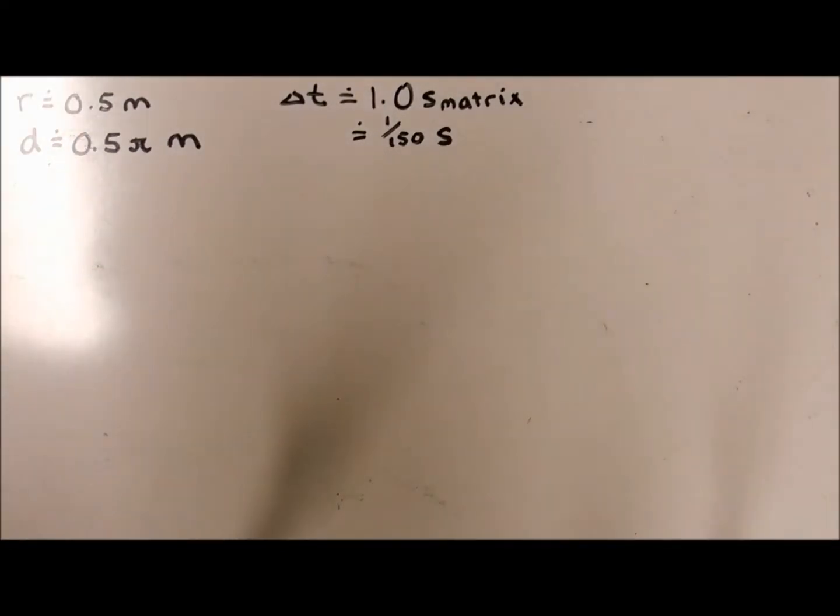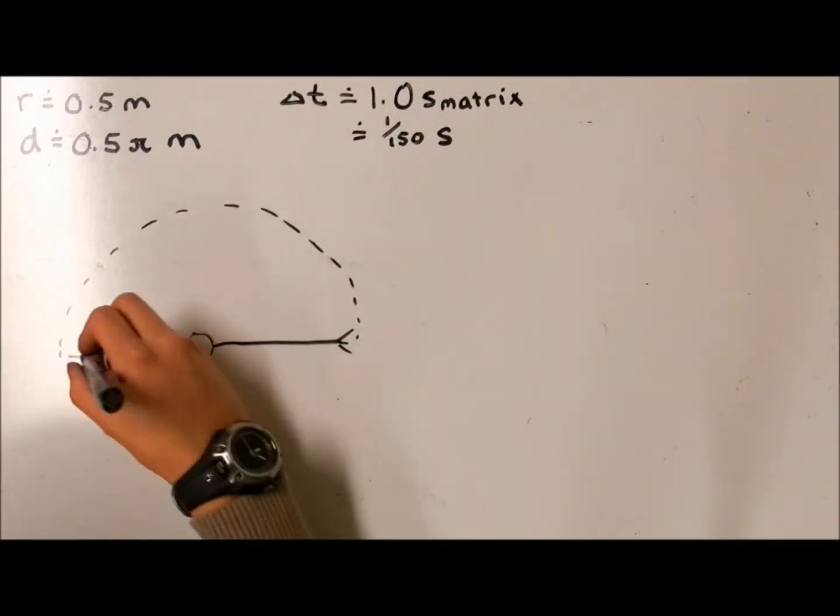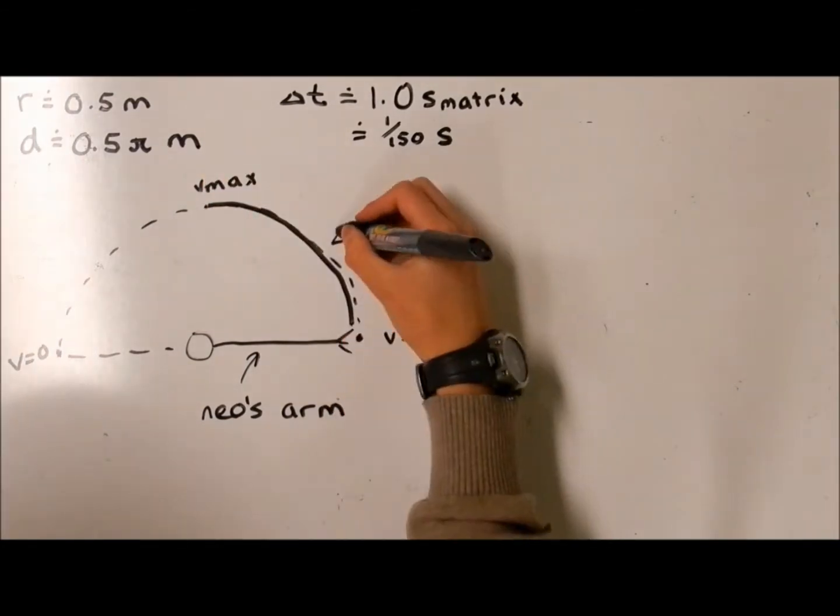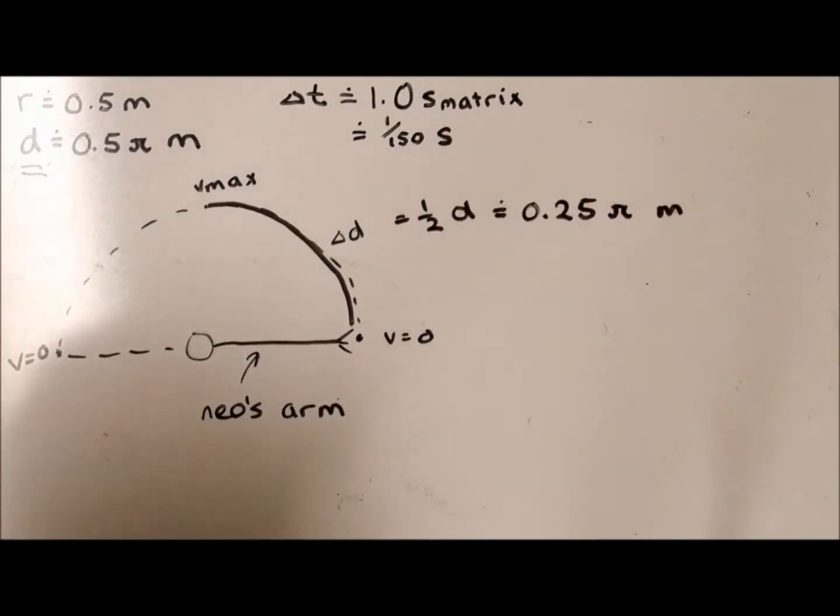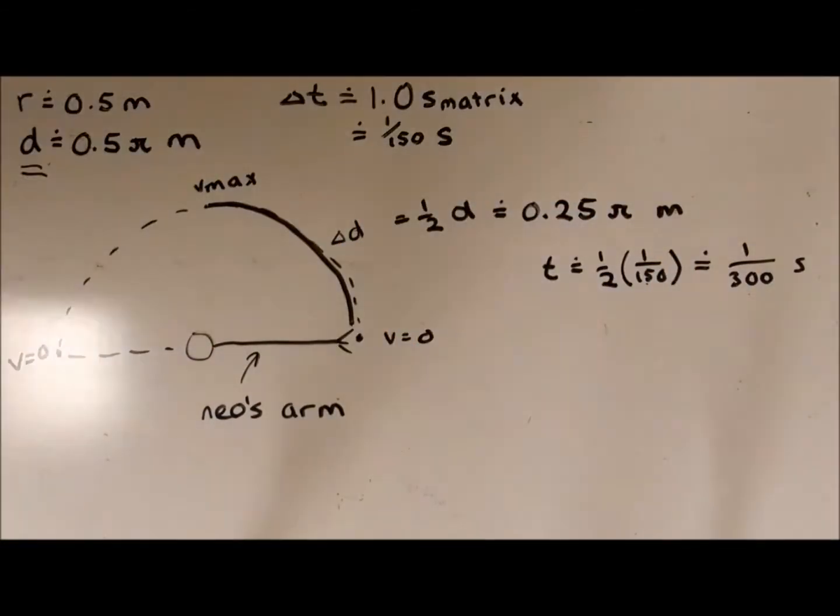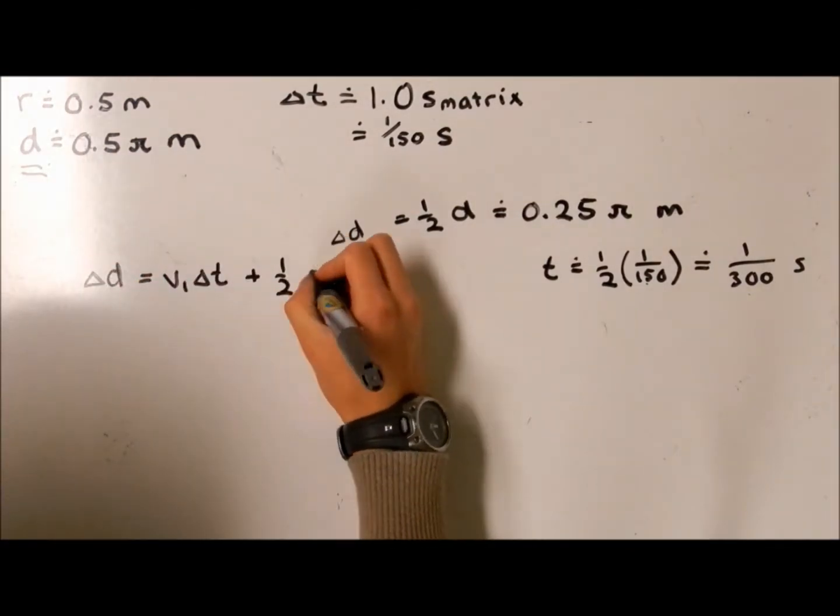Let's assume that Neo's arm experiences linear uniform acceleration with initial and final velocities of 0. Maximum velocity occurs halfway through, which is 0.25 pi meters and 1.03 seconds into the rotation.